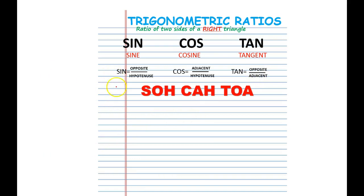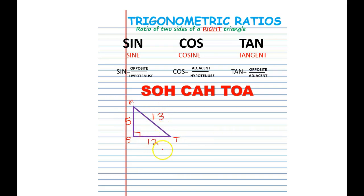What I want you to do now is draw this triangle — we will label it RST — and of course this is a right triangle. RS will be 5, RT will be 13, ST will be 12. First thing you're going to do is find the sine of angle R.